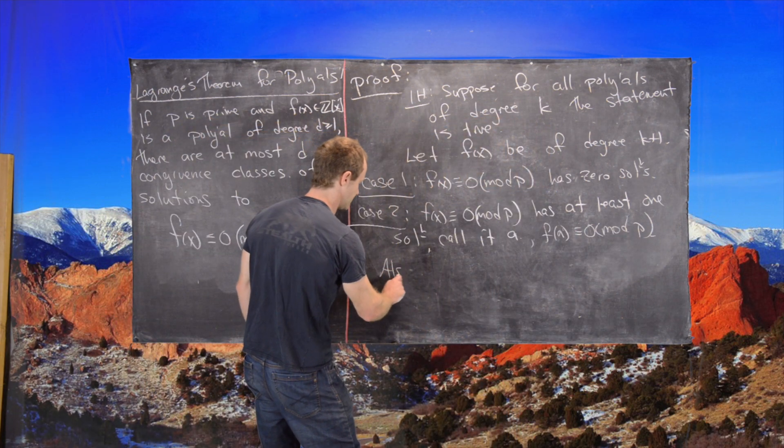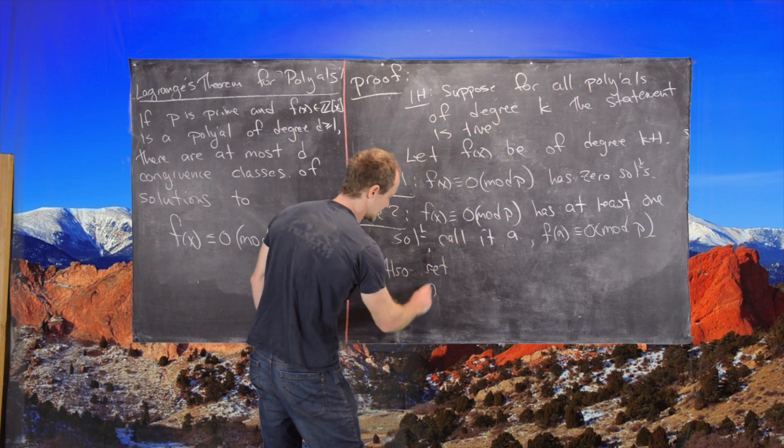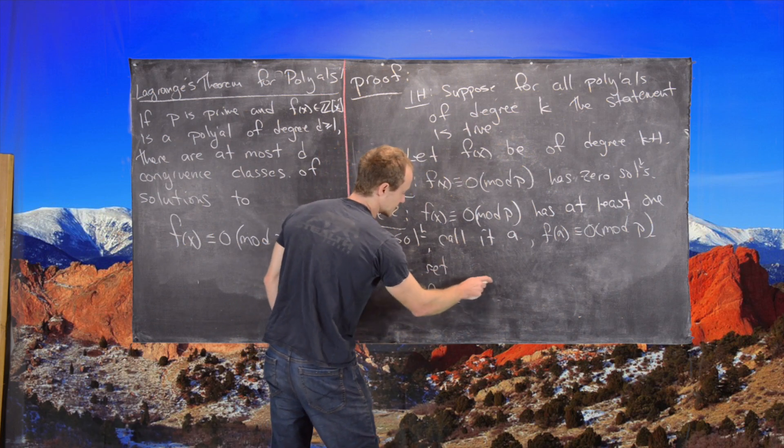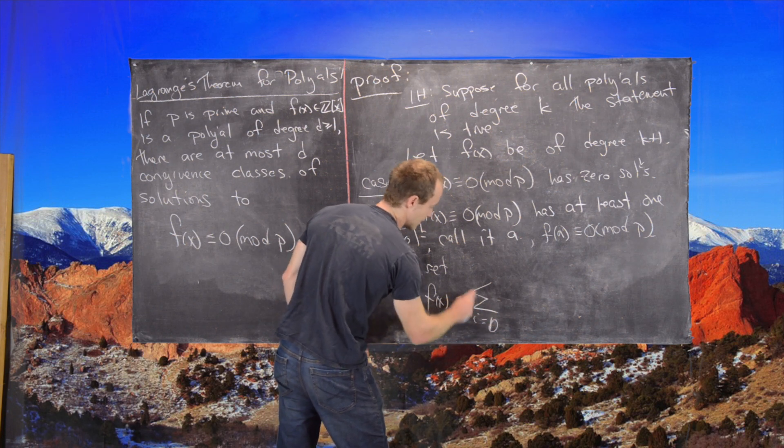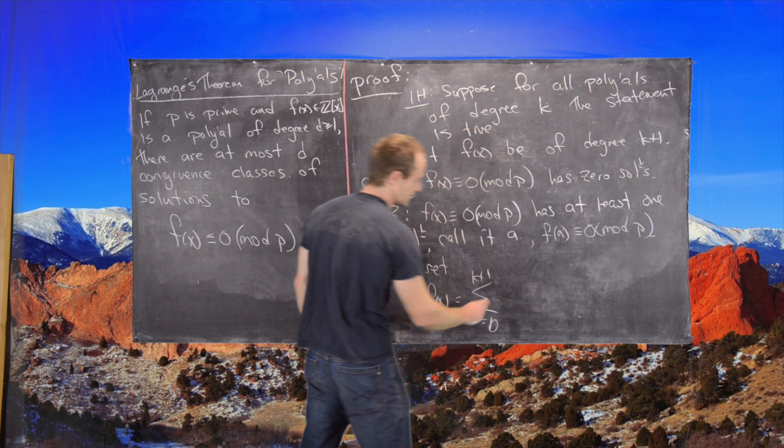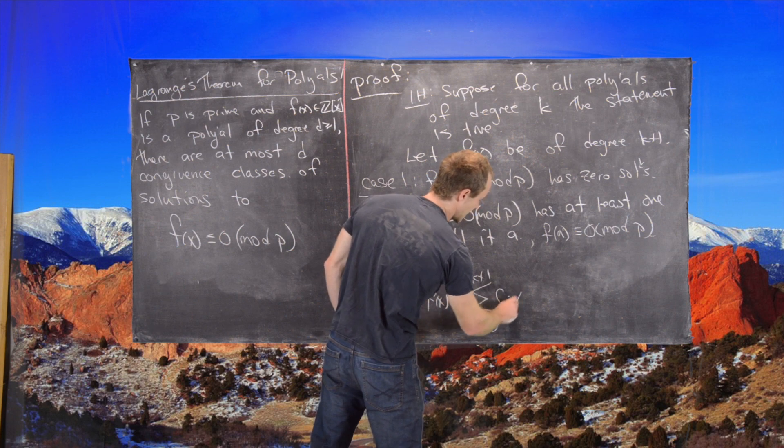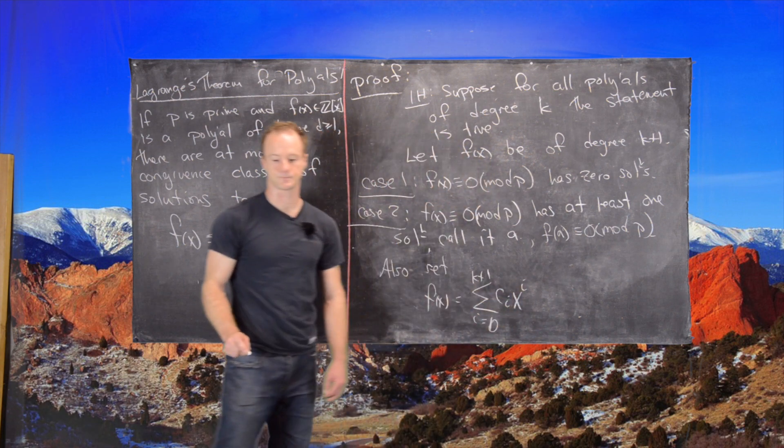We'll also need a bit more notation. Let's set F of X equal to the sum from I equals 0 to K plus 1 of C of I times X to the I.